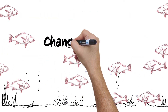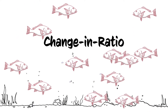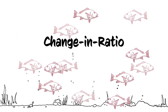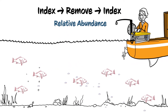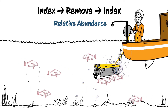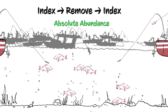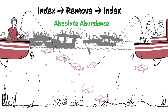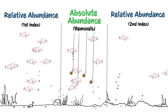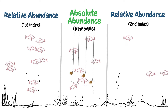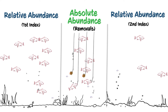A second type of depletion study is the change in ratio method. This method applies the same principles as index removal but collects the relative and absolute abundance data in a different way. The relative abundance is determined during scientific surveys immediately before and after a recreational fishing season, and the absolute removals are simply the fish removed by the fishery itself. Similar to the index removal method, the difference between the first and second index values will be compared to the absolute removals from the fishery to yield an abundance estimate which will be used to estimate population size.